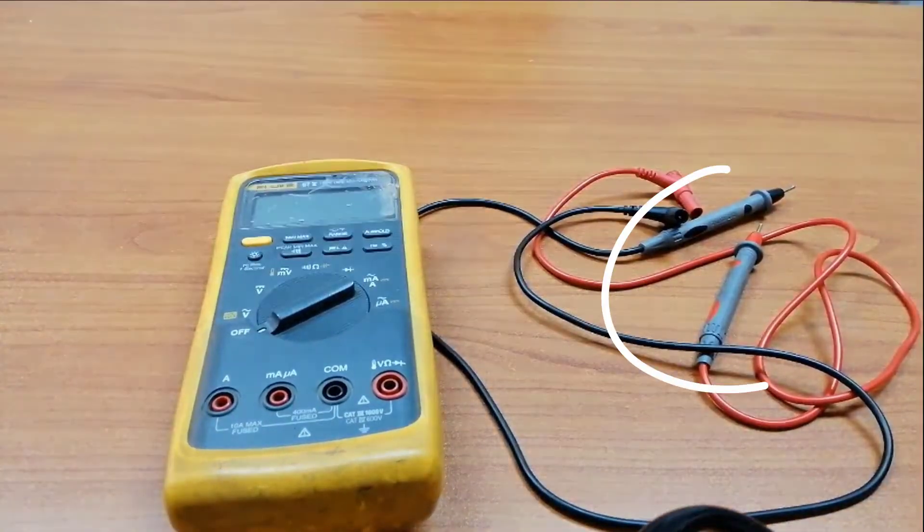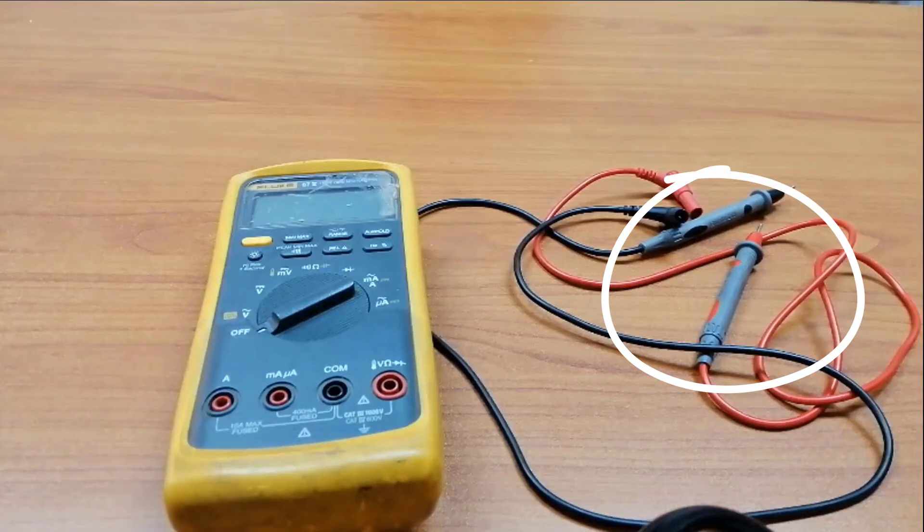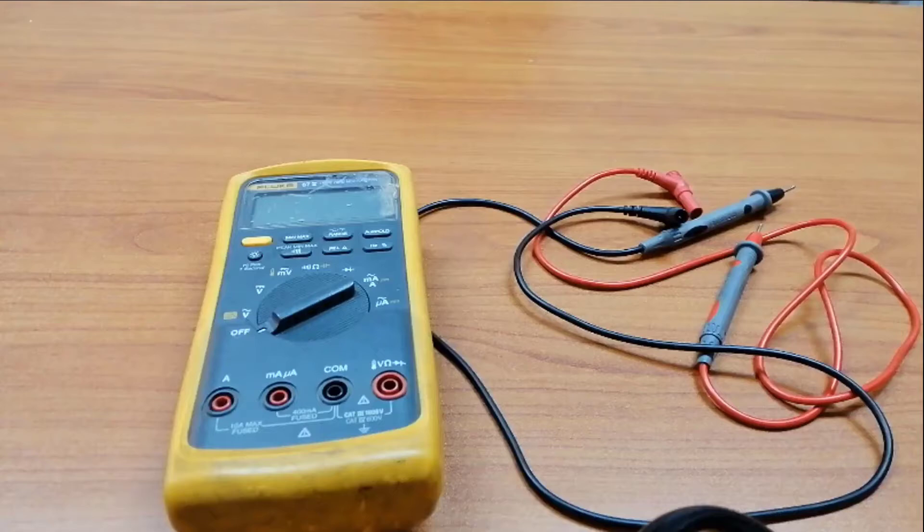Here we have two cords or two wires that will be responsible for connecting this device with any circuit or component that we want to measure. But where to connect these two cords or two wires? We have here four places or four terminals to put the cords on.